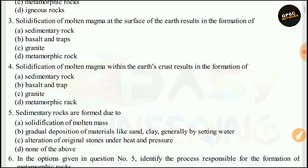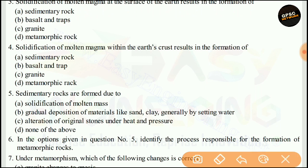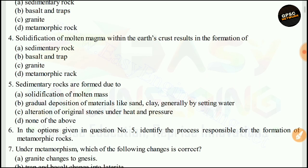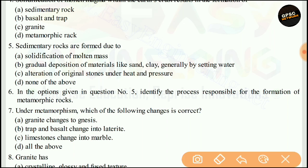Solidification of molten magma within the earth's crust results in the formation of granite. The right answer is C. Next, sedimentary rocks are formed due to the gradual deposition of materials like sand and clay, generally by the settling of water. The answer is B.